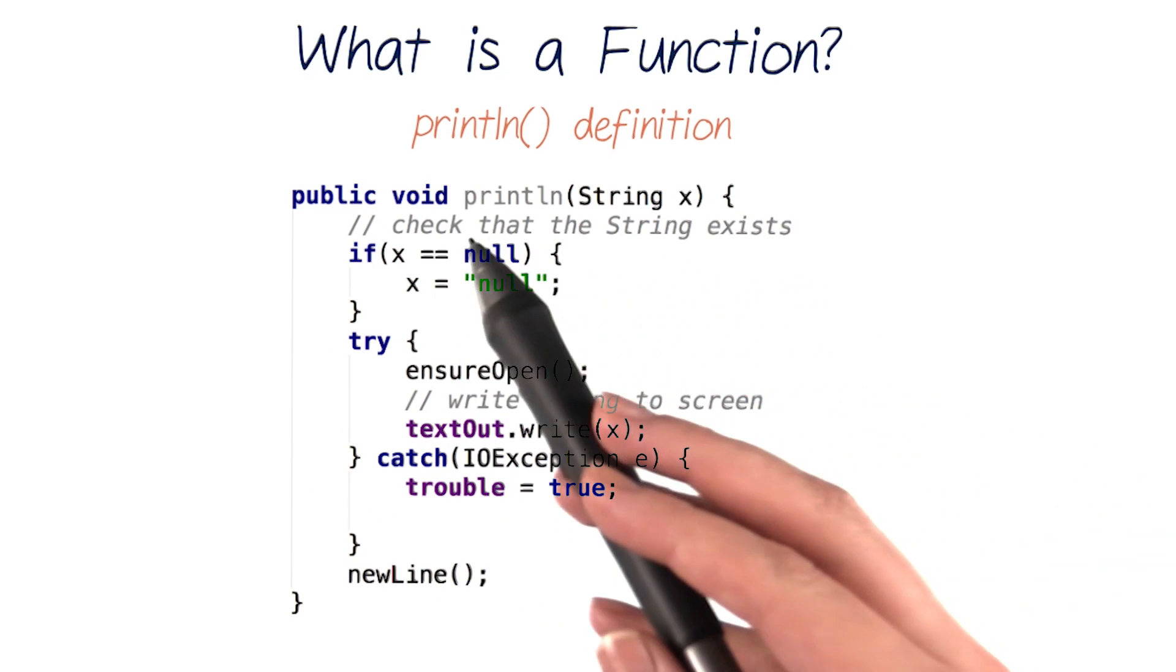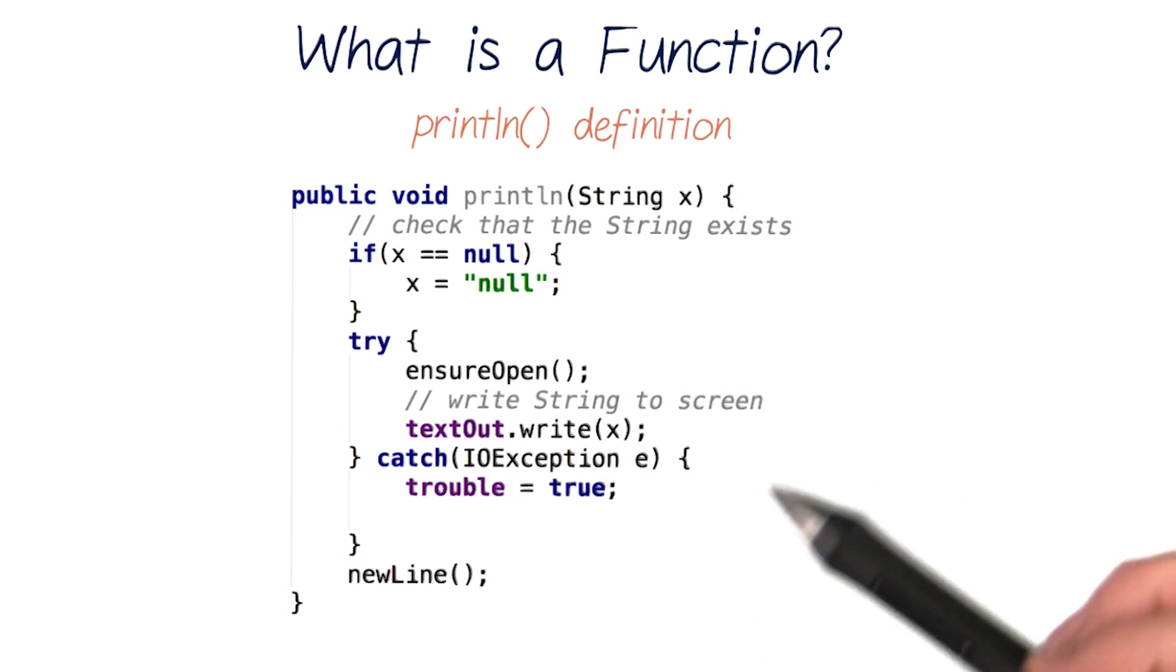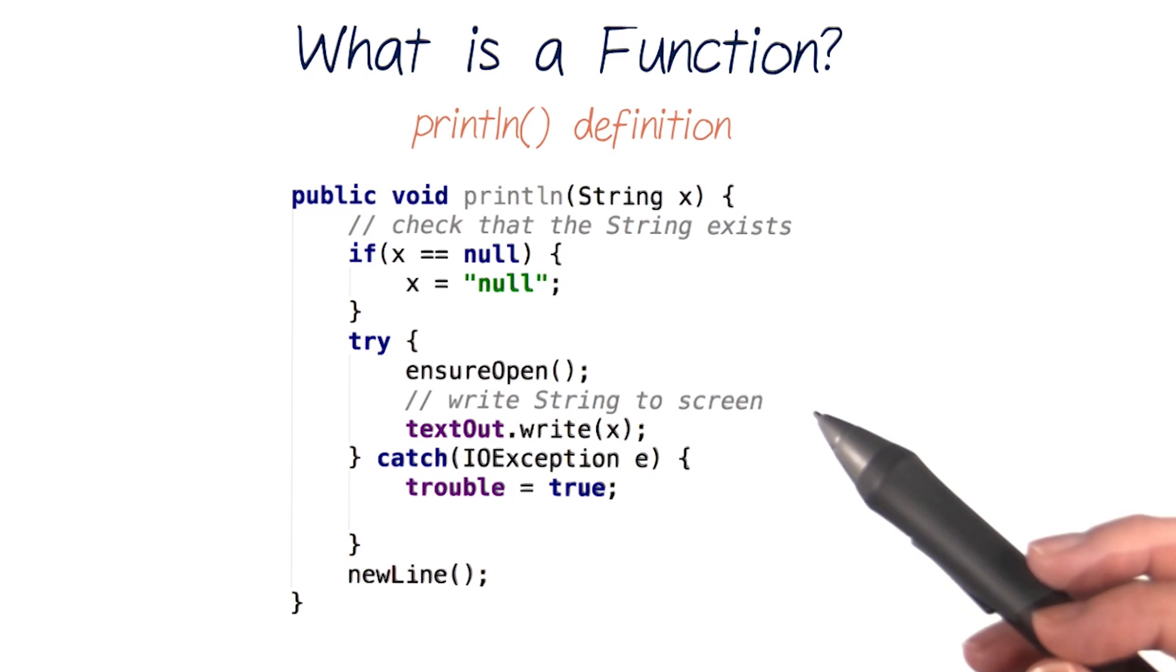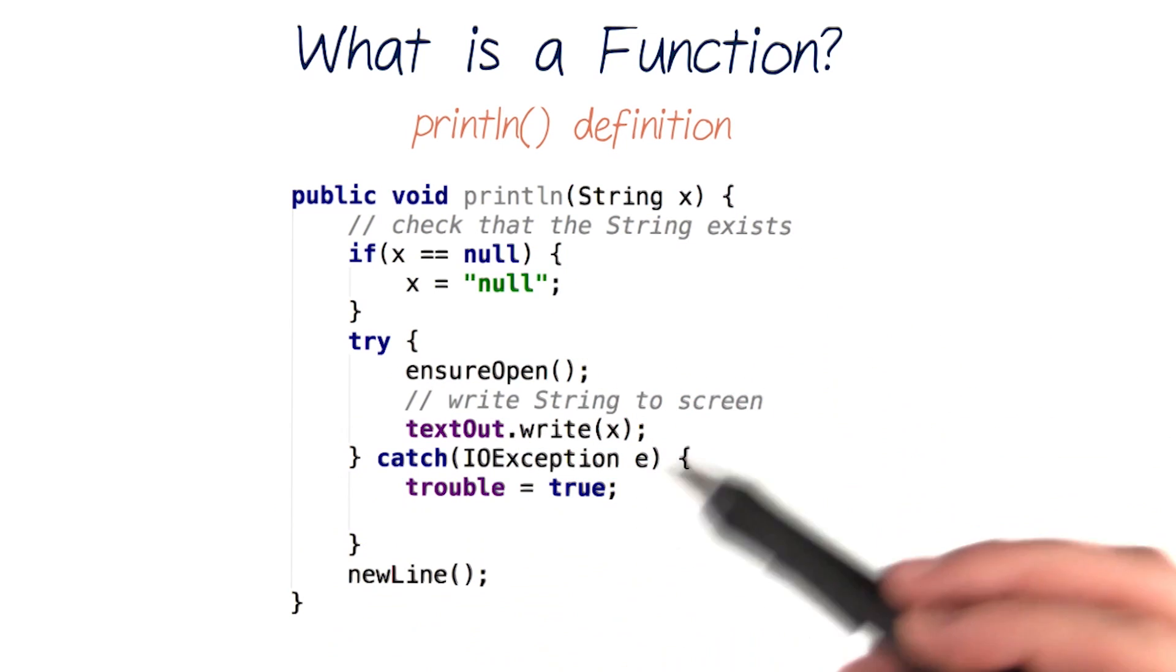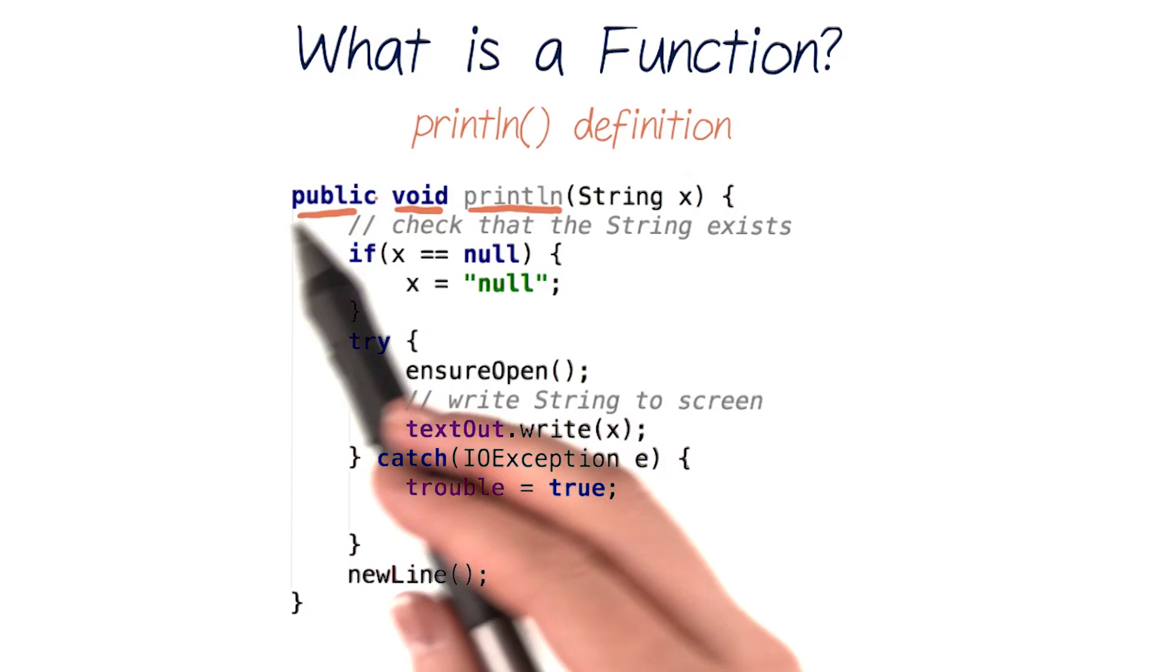Here's the function definition for printing a line. It contains several lines of code that work to display a message on our screen. Actually, this is only a portion of the code included in println. You can see that its definition starts out with these words: public and void.